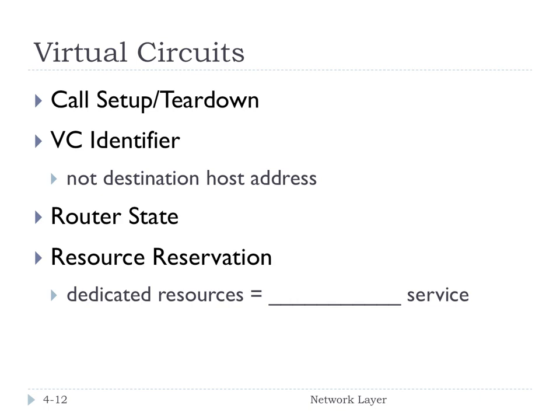That means you have very predictable service. If you know that you've got one meg per second reserved for this virtual circuit, then if you want to send, you can send at one meg per second and you've got that bandwidth. Whereas in a datagram network, there's no reservations, there's no setup teardown — which is nice on the front side — but that means you might not be able to send at one meg per second when you want to, because somebody else is crowding you out. So virtual circuits use VC identifiers, you have to maintain router state to keep up with where all the virtual circuits are, but because you have resource reservation, you get predictable service, and if that's really important, VCs may be the way to go.